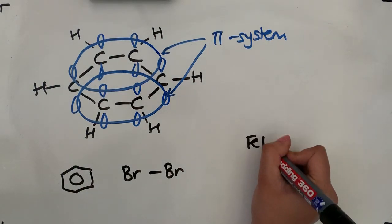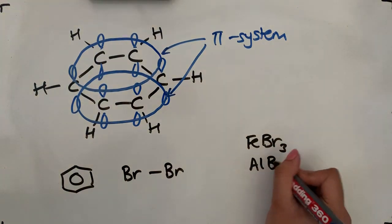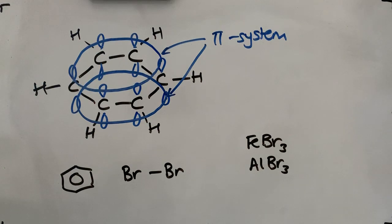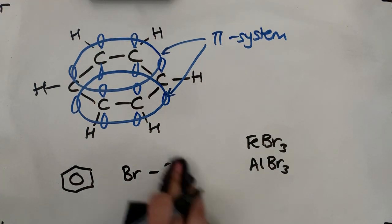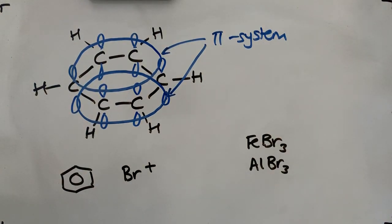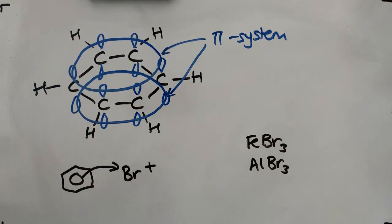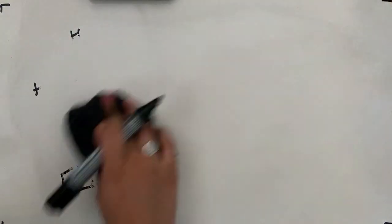For example, you could use FeBr3 or AlBr3 as the halogen carrier. What that does is generate the electrophile in the first step, forming the bromonium ion, which is our electrophile and allows the reaction to begin. So for benzene to react with an electrophile, it needs a positively charged electrophile — it cannot induce a dipole across a bond to get the reaction started. Benzene is not electron rich enough to induce dipoles and cannot start electrophilic substitution unless a positively charged electrophile is present.